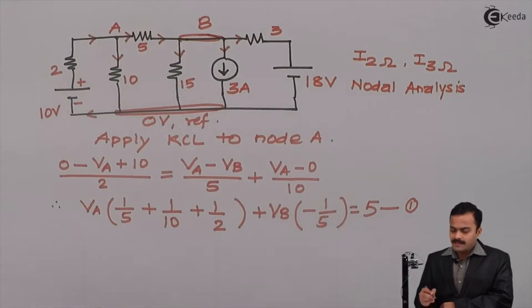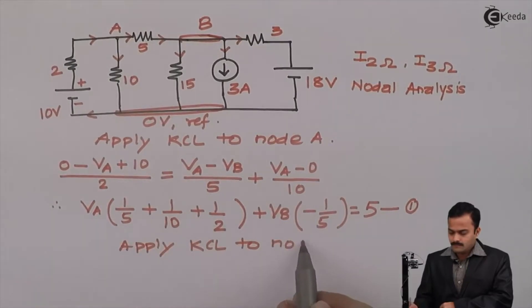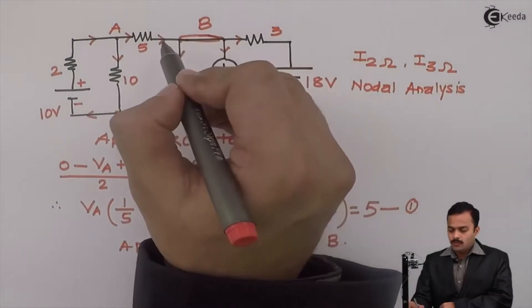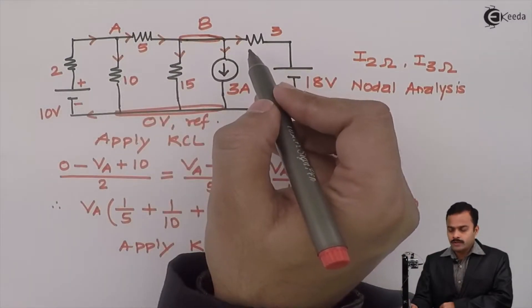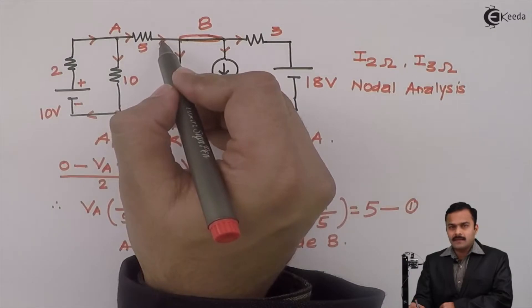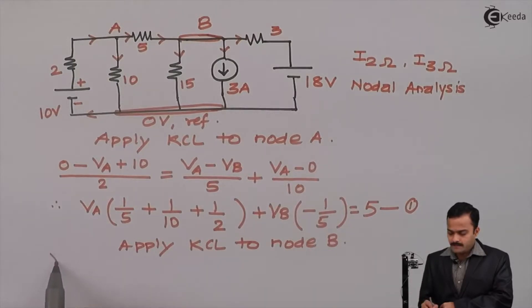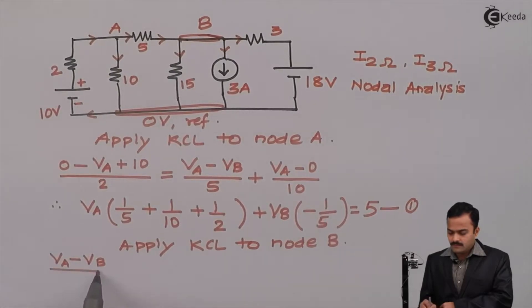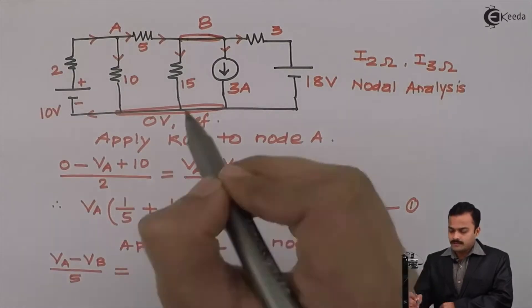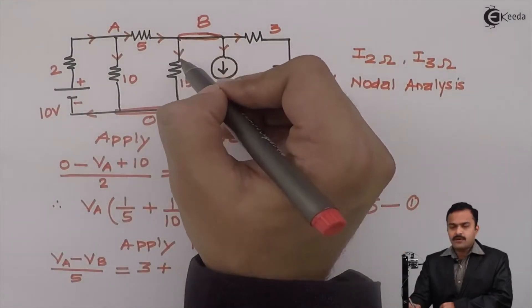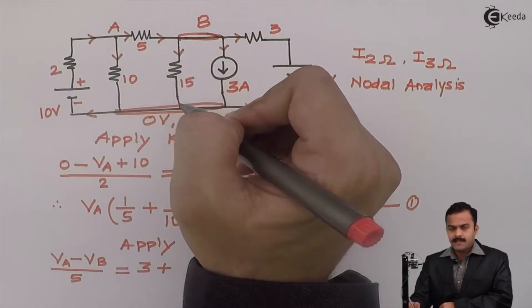Similarly, I can apply KCL to node B. Now for node B, only one incoming current and remaining are outgoing currents. So equation for this incoming current we have already written. So I will copy from equation 1. So it is VA minus VB divided by 5 equal to, remaining currents are outgoing, so 3 ampere as it is.